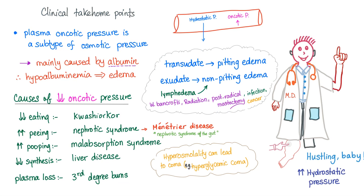Okay, my favorite part of the lecture, clinical take-home points. Plasma oncotic pressure is a subtype of osmotic pressure, which makes sense. There are forces here. Hydrostatic pressure is trying to force fluid outside of your blood vessel. Oncotic pressure is gonna keep your fluid inside the blood vessel. Which one is winning under normal conditions? The answer is oncotic pressure to keep the fluid inside your freaking blood vessels.